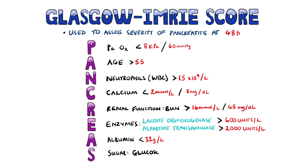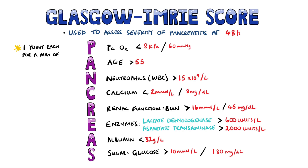And the S is for sugar, meaning a glucose level above 10 millimoles per litre, or 180 milligrams per deciliter. Each criterion is worth one point. The higher the score, the higher the severity.